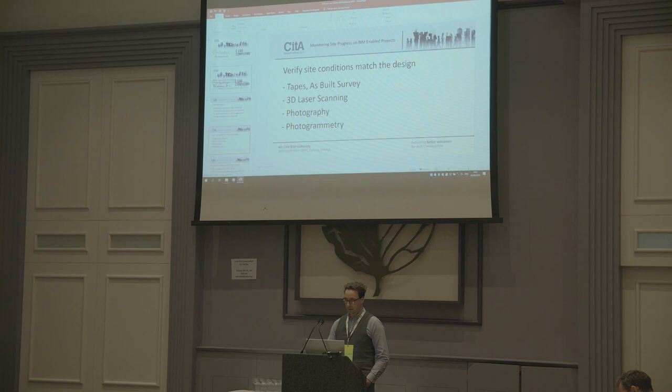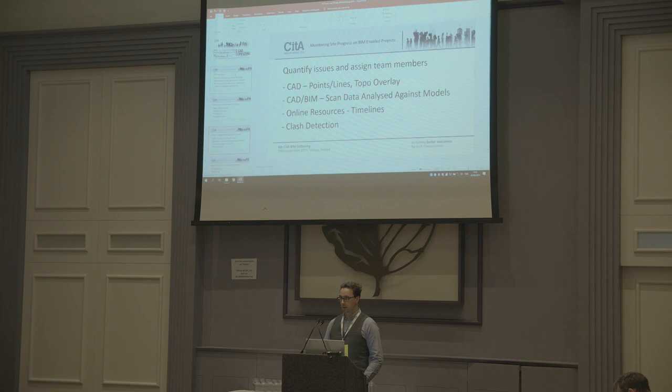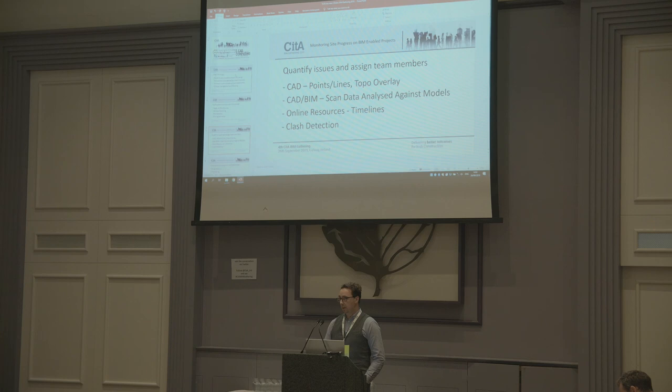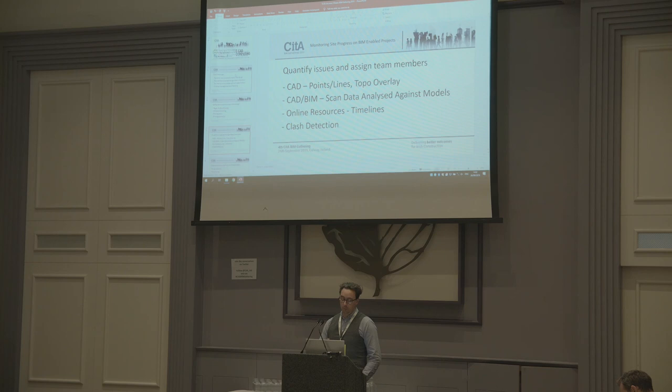You quantify those issues typically through CAD — which is points and lines visually — or a topo overlay. You'd have your survey, overlay it on your design, and see where changes have gone. It's a manual process, and it's the same with CAD and BIM models. You can analyze the scan data against your CAD or 3D models. There are also online resources which will allow you to share that data, up to and including clash detection, which will clash site conditions against models, and then you can raise issues and assign those out.